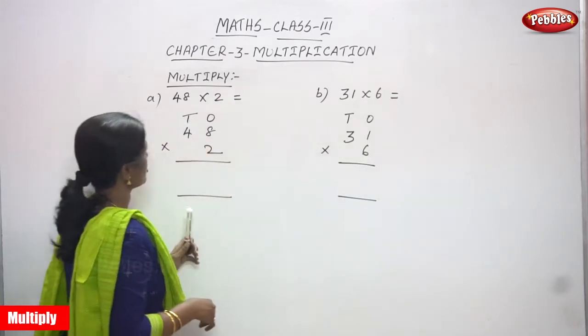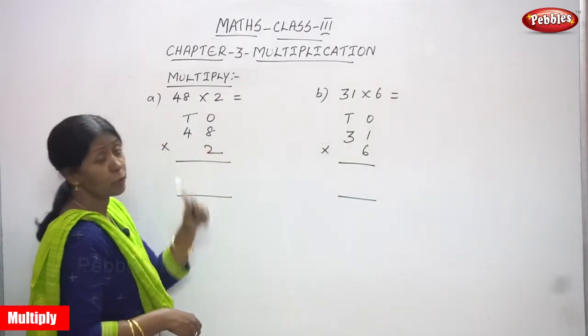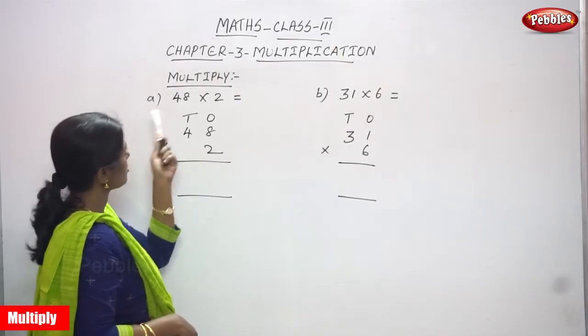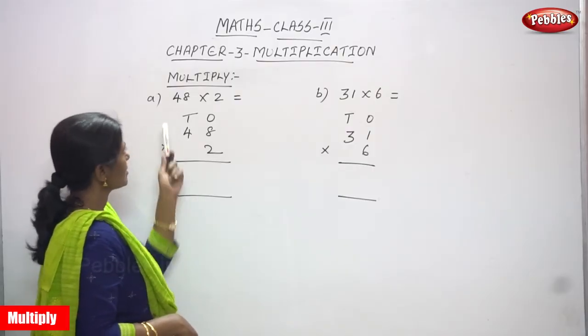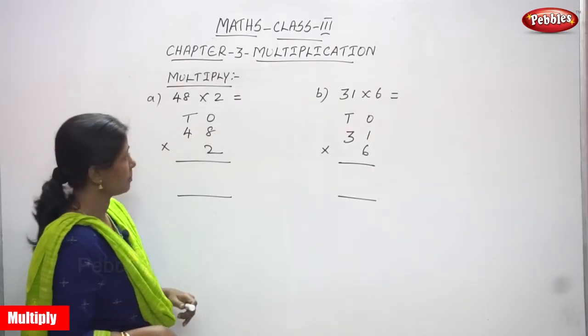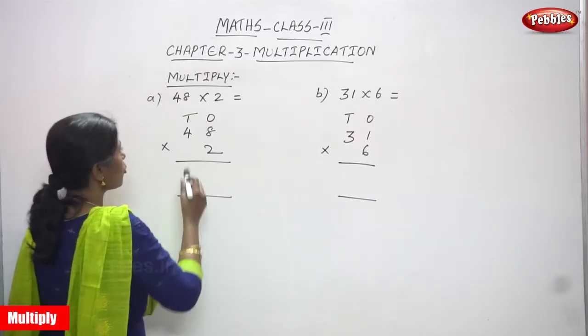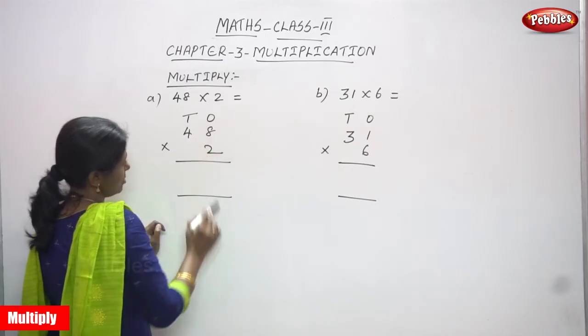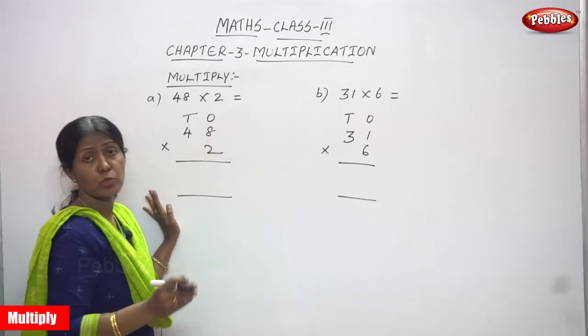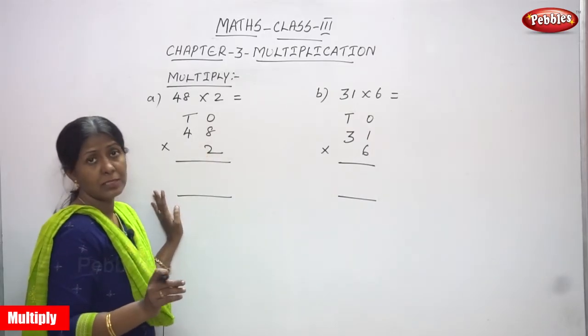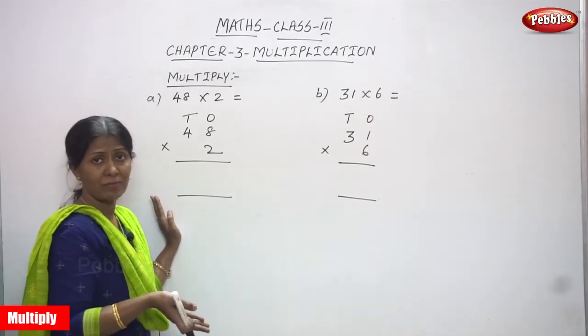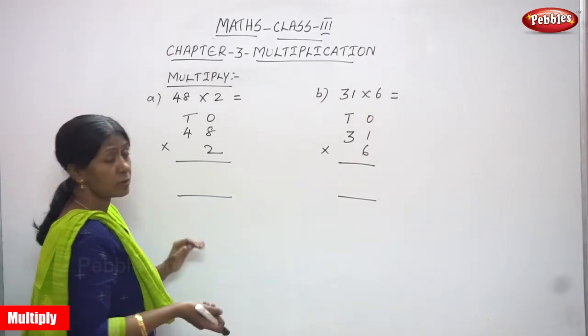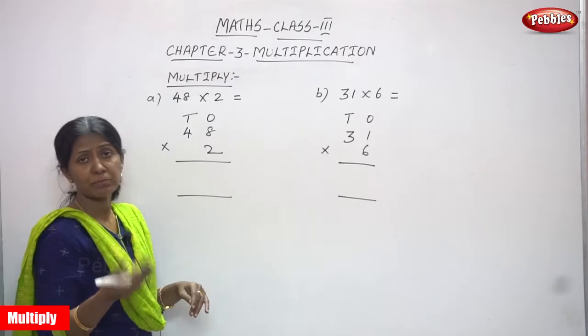Now we are going to see multiplication. First we are going to see 48 into 2. This is a two-digit number and a single-digit number. We are going to multiply. So 48 is going to multiply by 2. This is ones and tens. This is a normal multiplication without regrouping. We are going to learn simple multiplication without regrouping.